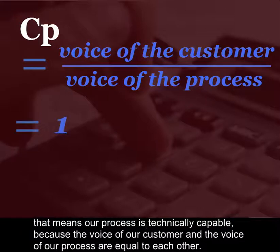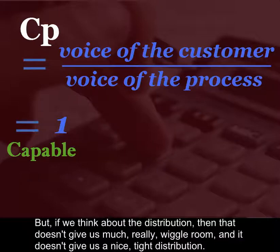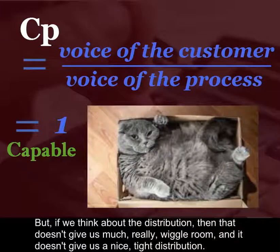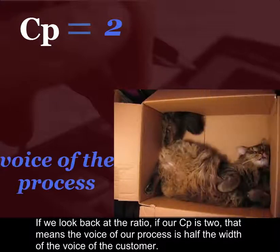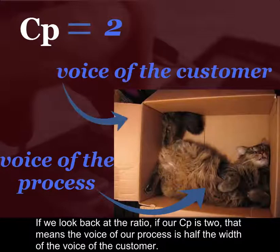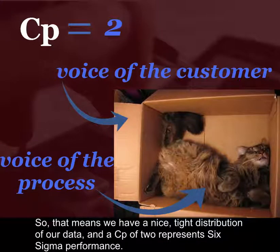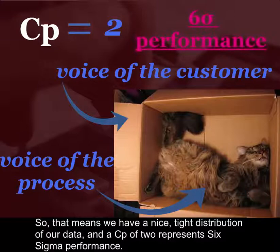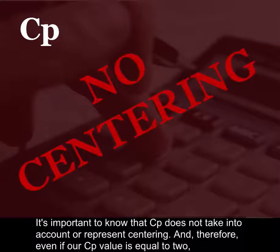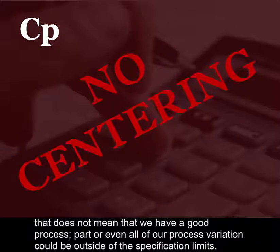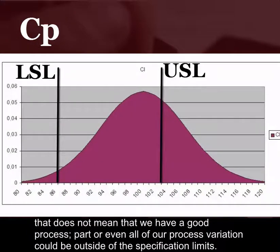If our CP is equal to one, that means our process is technically capable because the voice of the customer and the voice of the process are equal to each other. But that doesn't give us much wiggle room. If our CP is two, that means the voice of our process is half the width of the voice of the customer, meaning we have a nice tight distribution. A CP of two represents Six Sigma performance. It's important to note that CP does not take into account centering; therefore, even if our CP value equals two, part or all of our process variation could be outside of our specification limits.